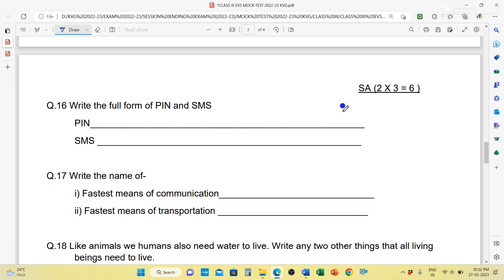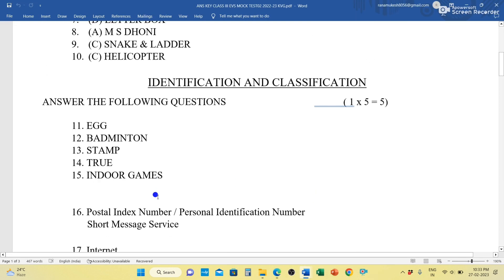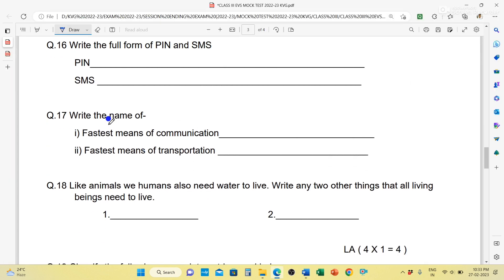Next, three questions each carrying two marks. Write the full form of PIN and SMS. Full form of PIN is Postal Index Number or Personal Identification Number. And SMS is Short Message Service. Next, write the name of fastest means of communication. Fastest means of transportation is your aeroplane.